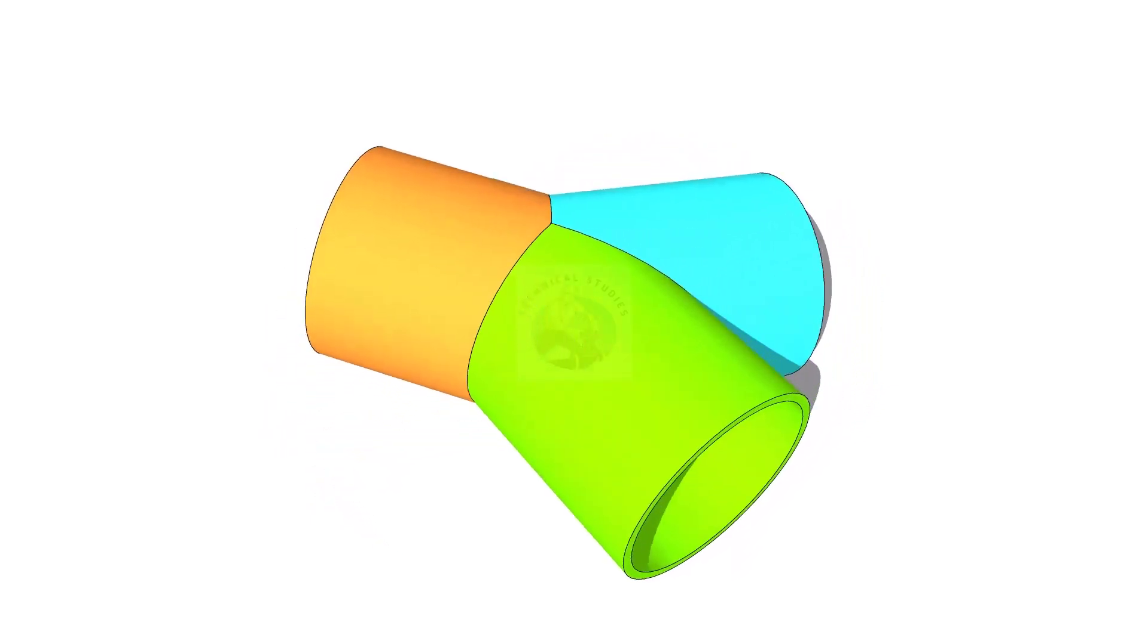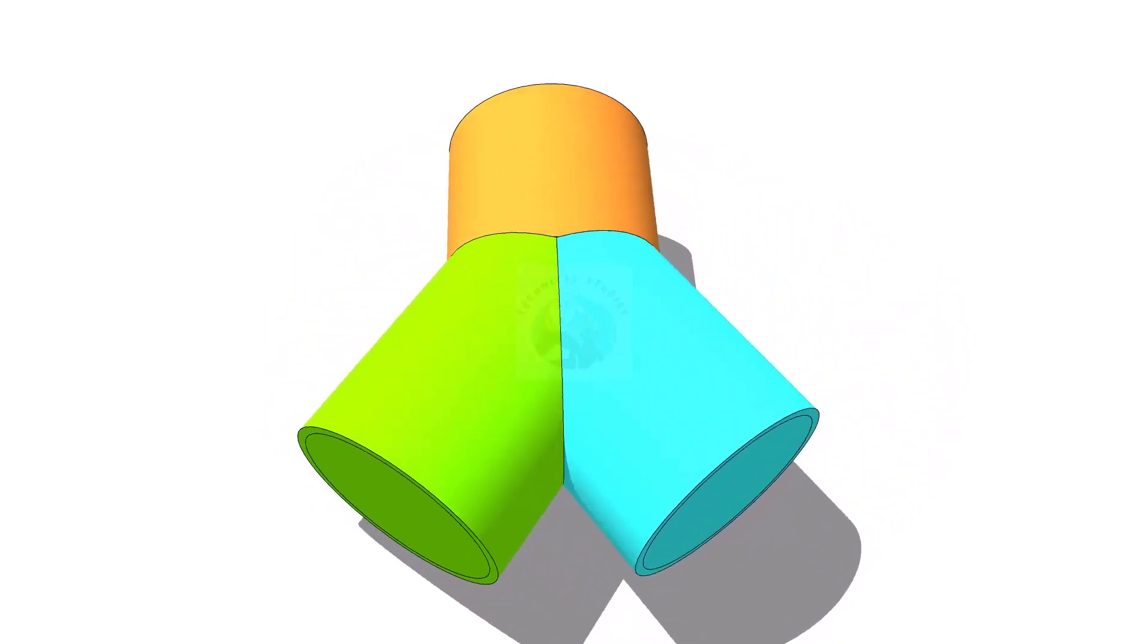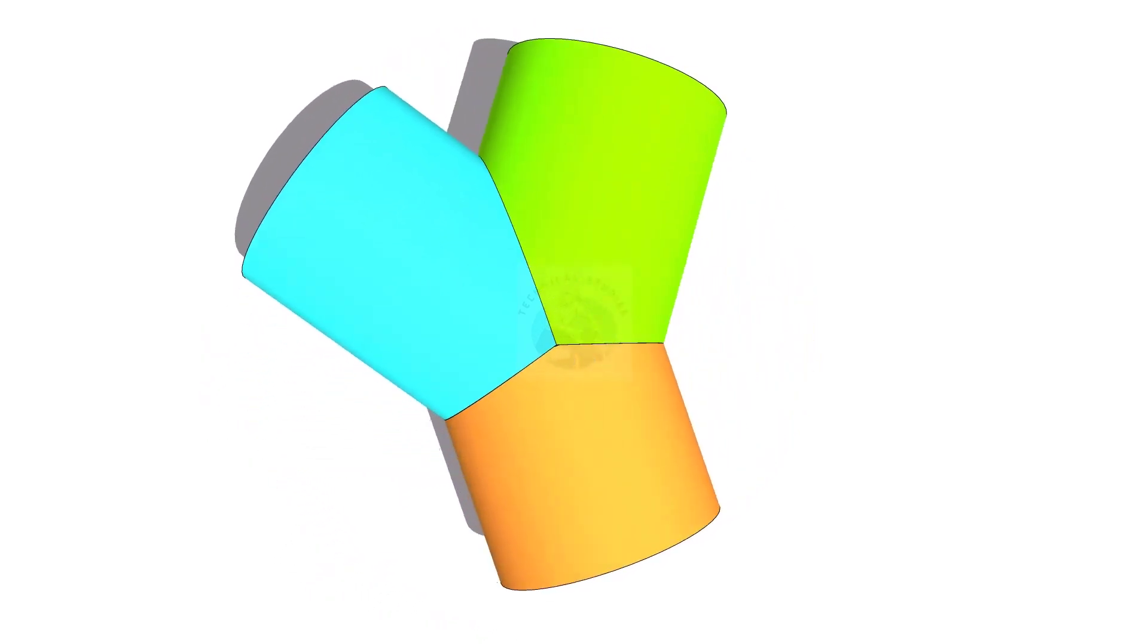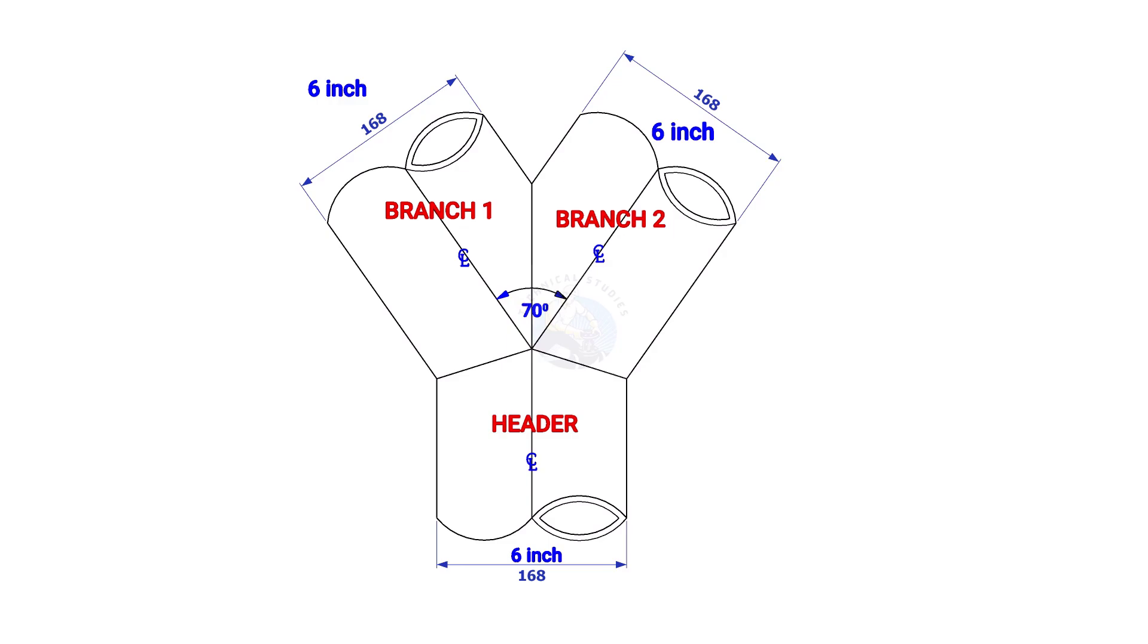Welcome to the technical studies. In this video we will learn how to lay out a Y branch. The size of the Y branch in this example is 6 inches and the including angle is 70 degrees.